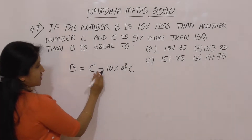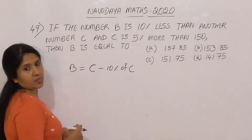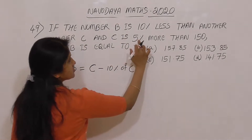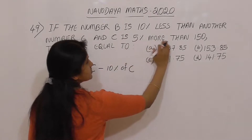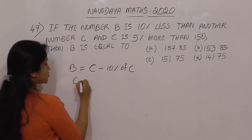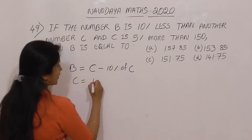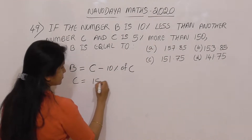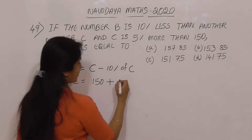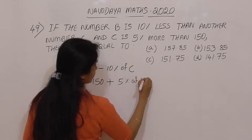B is 10% less than C, so we subtract. B is 10% of C less than C. Next, C is 5% more than 150. So C equals 150 plus 5% of 150.